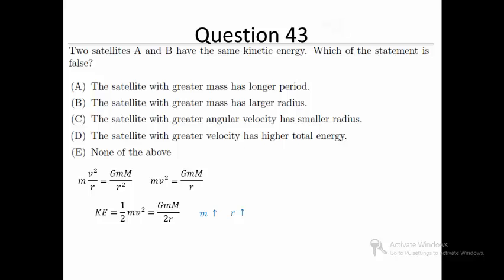Next, we know that the potential energy is minus G small m big M over r. Since a higher velocity means that the satellite has smaller mass, this will result in a less negative potential energy.